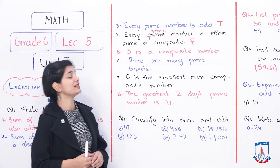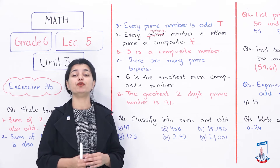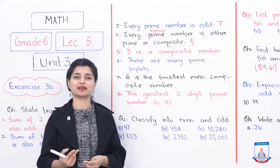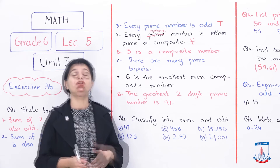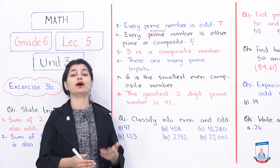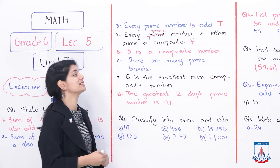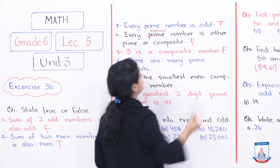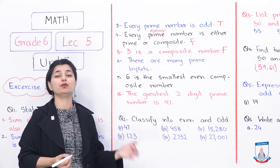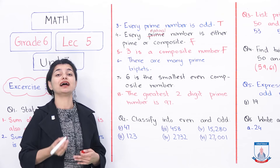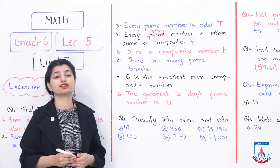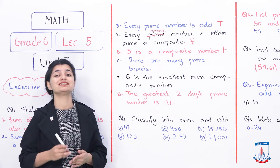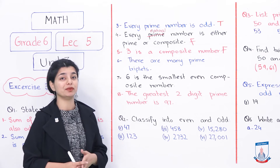The statement: 3 is a composite number. A composite number has more than two factors. What are the factors of 3? The factors are only 1 and 3 — just two factors. Since 3 has exactly two factors, it is actually a prime number, not composite. So this statement is false.